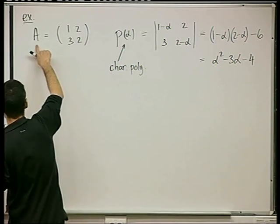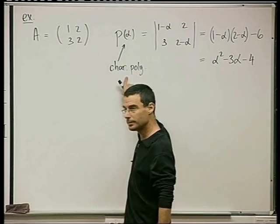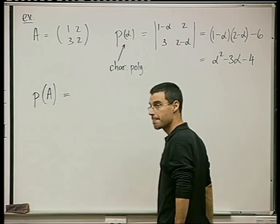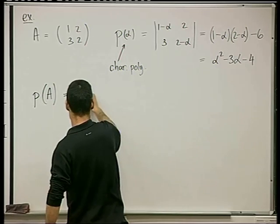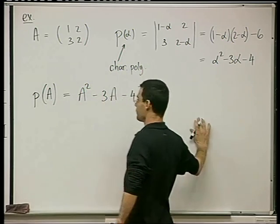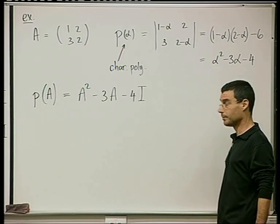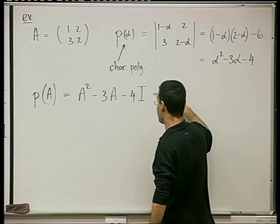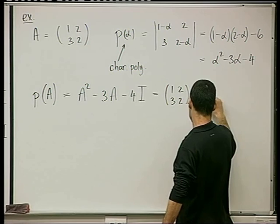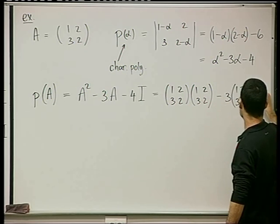What happens when we take A and substitute it into its own characteristic polynomial? So what is p of A? It's A squared minus 3A minus 4I. I substituted A into its polynomial. So I get [[1,2],[3,2]] squared, minus 3 times [[1,2],[3,2]], minus 4I.